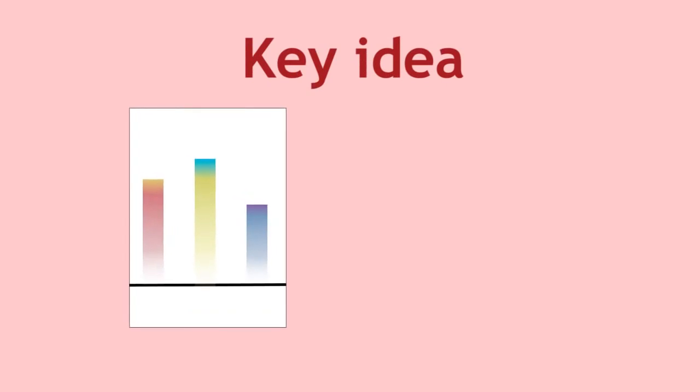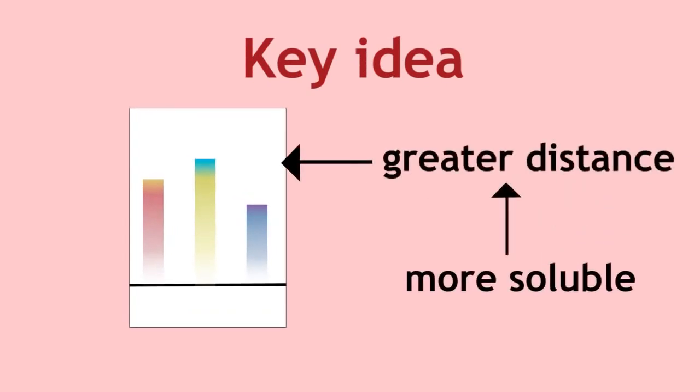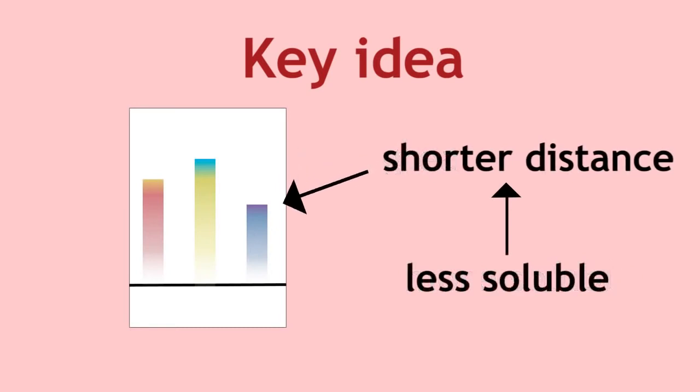Here is the key idea. A component that is more soluble in water travels a greater distance up the chromatography paper, and a less soluble component travels a shorter distance.